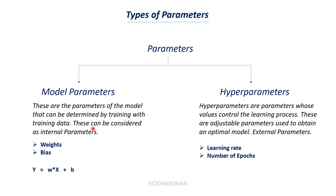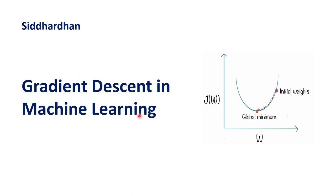Model parameters are determined by the model itself by going through the data — this is very important. Whereas for hyperparameters, we provide values like learning rate and number of epochs; the model does not find these values itself. With this understanding, let's move on to the next topic: gradient descent.